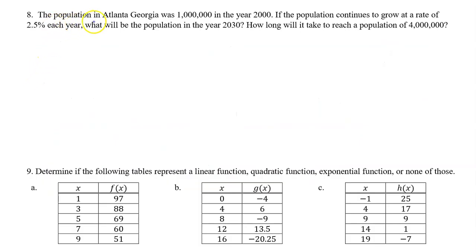Number 8. The population in Atlanta, Georgia was 1 million in the year 2000. If the population continues to grow at a rate of 2.5% each year, what will be the population in the year 2030? How long will it take to reach a population of 4 million?